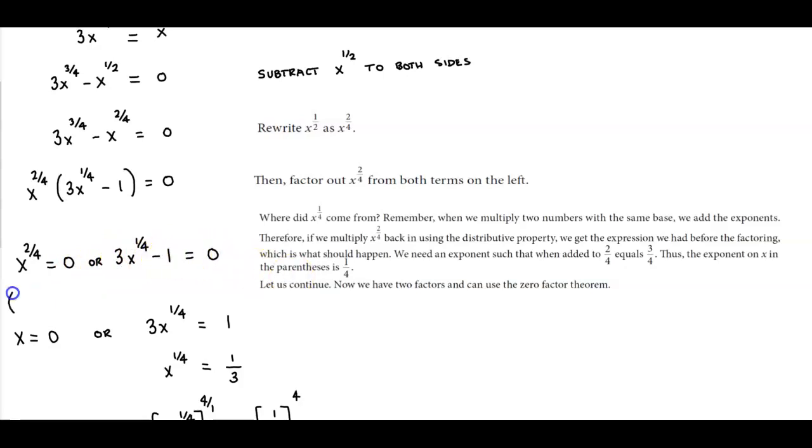Now over here we can solve by raising it to the power of the reciprocal which is 4 over 2 on this side. And then we can raise 0 to the 4 over 2. Well we're going to get x on the left side and 0 raised to any number is going to give you 0.